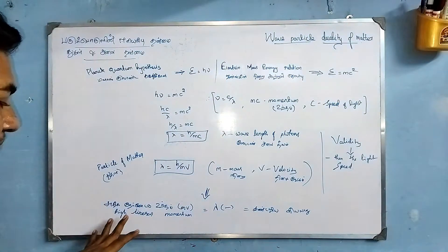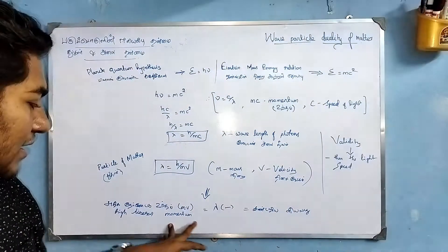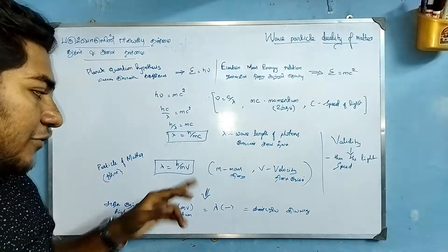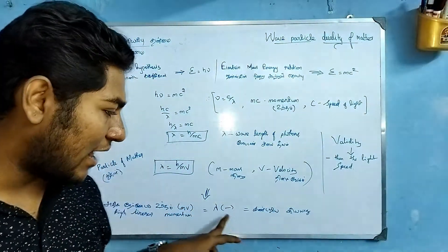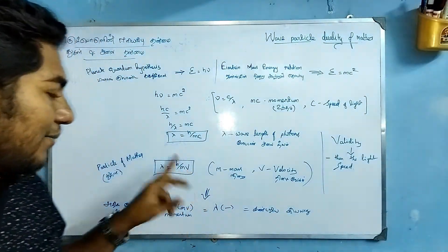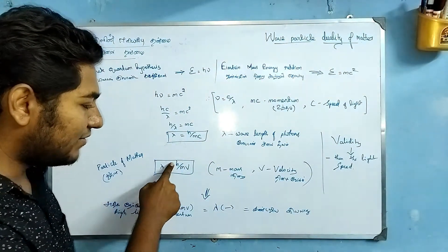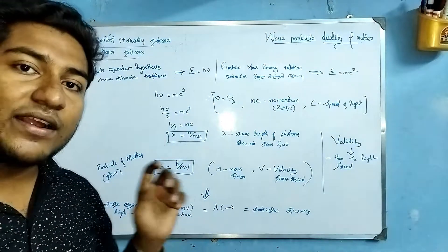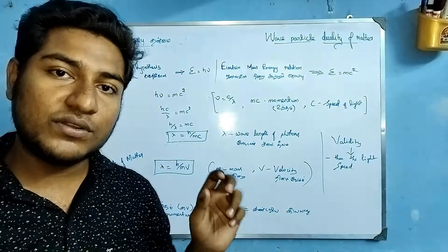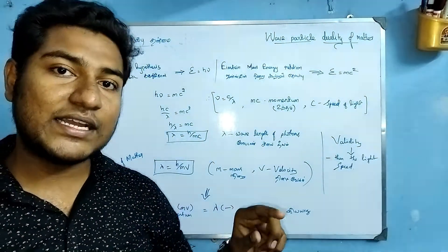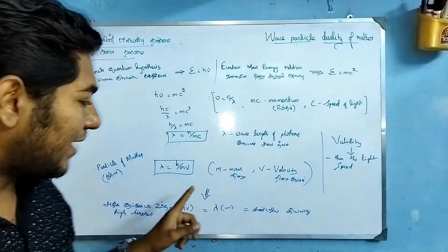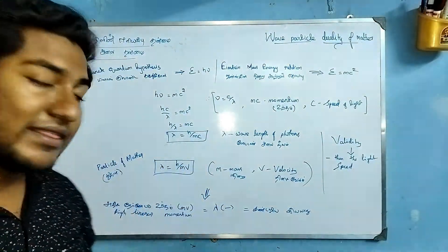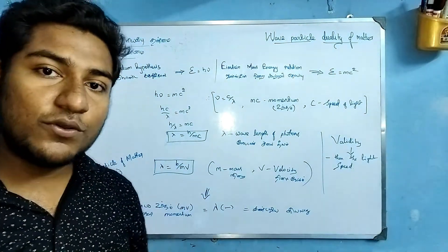In this equation, if we use a high linear momentum mv, the wavelength lambda becomes very small — it is negligibly small. Lambda is inversely proportional to the momentum. The Planck constant h is 6.626 times 10 to the power minus 34 joule-seconds. With this very small value of h, we can see how the wavelength value is determined.